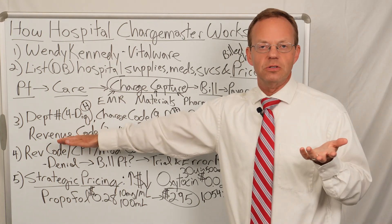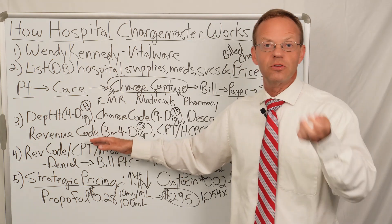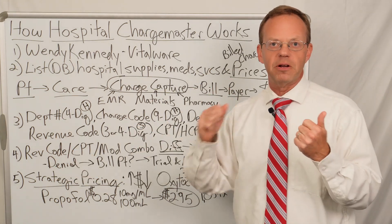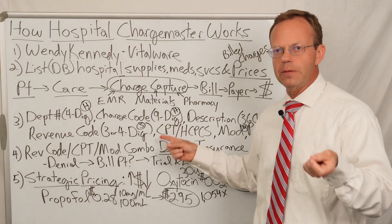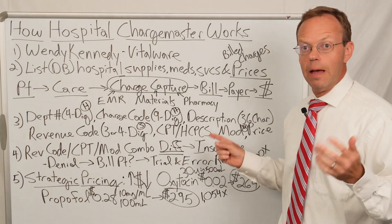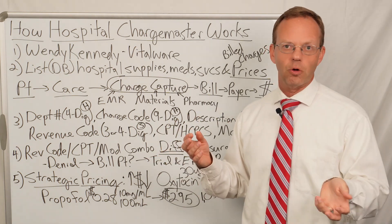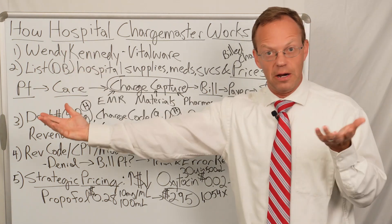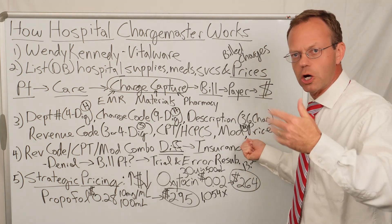There will be different revenue codes associated with that single CPT code for laparoscopic cholecystectomy: revenue codes for OR time, for anesthesia medication, for pre-operative and post-operative pain medication — a whole bunch of revenue codes for that one procedure. Next you have modifiers — the most common being left side or right side, such as left versus right total knee replacement. You can have up to four modifiers on a particular charge. And finally, you have the price — the billed charges being sent out.